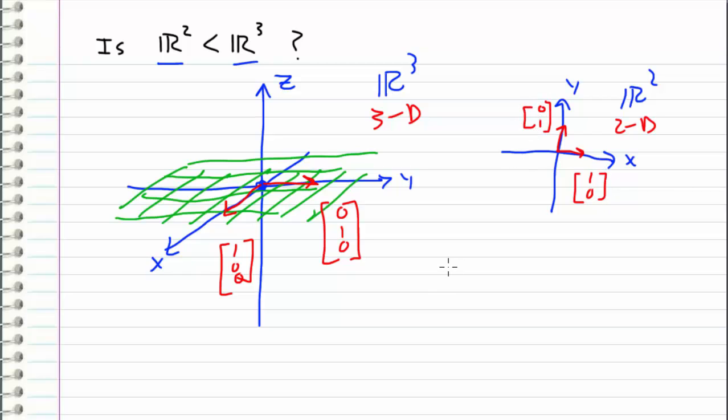1). So in general we can define a rule that Rᵐ is not a subspace of Rⁿ, because m-dimensional vectors exist in m-dimensional space, and n-dimensional vectors exist in n-dimensional space.